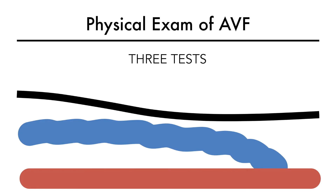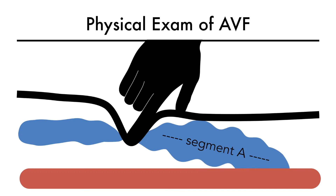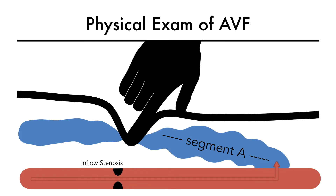Inflow can be assessed using a test called pulse augmentation. As the name suggests, you're trying to augment the pulsatility of a fistula with this test. You do this by manually causing a venous outflow obstruction. A fistula should not be hyperpulsatile unless there is venous outflow obstruction. If you completely occlude a fistula and block venous outflow, it should cause the fistula to plump up and appear hyperpulsatile between your obstructing finger and the anastomosis — let's call this segment A. This will happen as long as inflow is adequate. If there is an arterial inflow stenosis, inflow into the fistula is reduced, decreasing the degree of filling or hyperpulsatility of segment A, meaning there is reduced pulse augmentation of segment A.